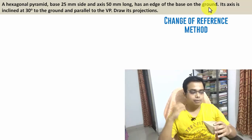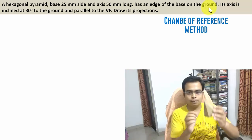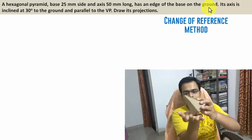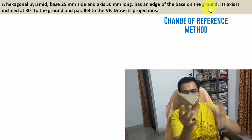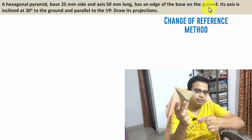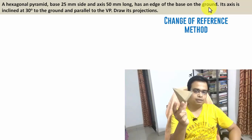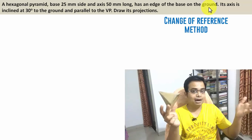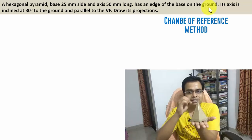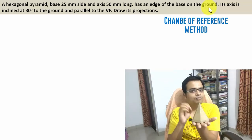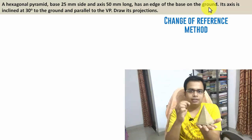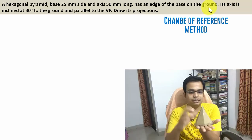The axis is also parallel to the VP. Now as far as the change of reference method is concerned, the object will remain in its initial position. We are going to assume that the entire object is resting with its base on the HP, and then we need to find from where we can see the true shape of its base. The answer is it can only be seen from the top, and therefore we begin by making the top view.